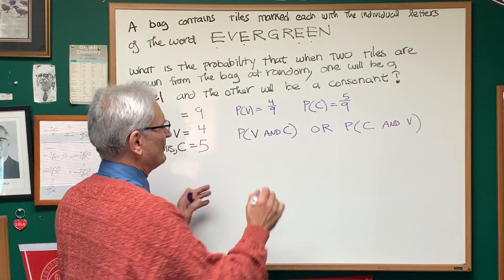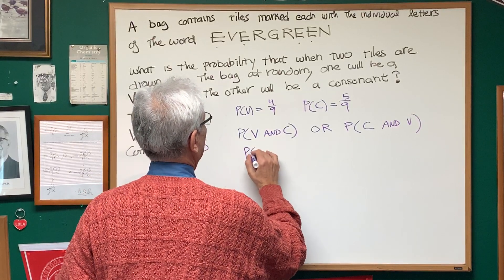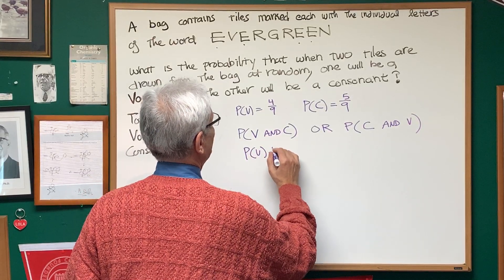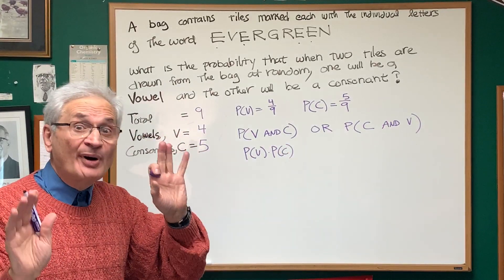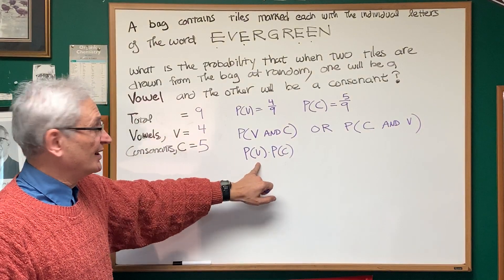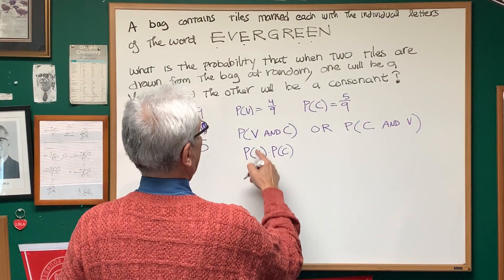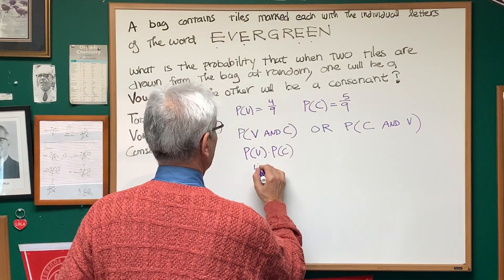Well, when I have the word and, if I'm looking for the probability of both of these events happening simultaneously, I'm going to take the product of their probabilities. But this is a dependent probability because what's the probability of choosing a vowel? It's four ninths.